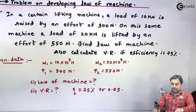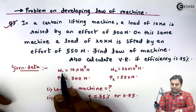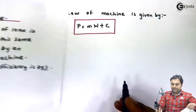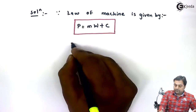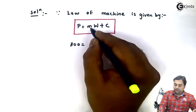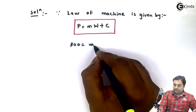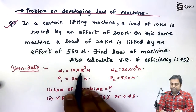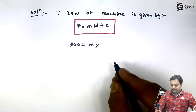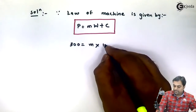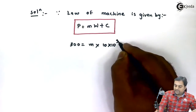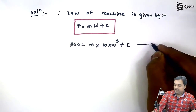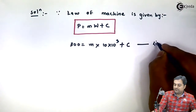Using the first condition: the effort P1 is 300 Newton when the load W1 is 10 × 10³ Newton. Substituting into P = mW + C gives: 300 = m × (10 × 10³) + C. This is Equation 1.